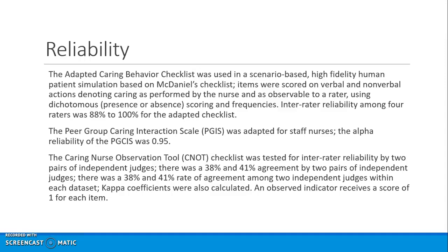Looking at the adapted caring behaviors checklist, the inter-rater reliability for the McDaniels instrument ranged from 88 to 100 percent agreement. For the Peer Group Caring Interaction Scale, the alpha was 0.95. For the Caring Nurse Observation Tool, inter-rater reliability was calculated by two independent pairs of judges, yielding 38 to 41 agreement, and kappa coefficients were also calculated.